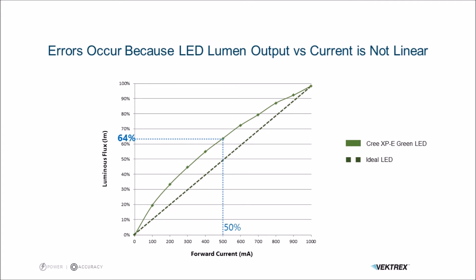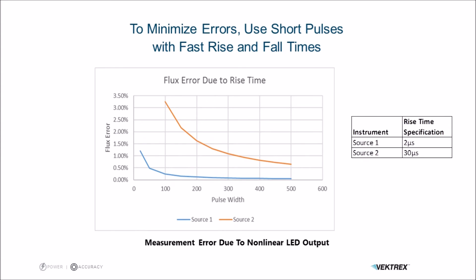If you do the math on the errors, you get some curves like this. Two sources are plotted: one has a 2 microsecond rise time, typical of the SpikeSafe series; another has a 30 microsecond rise and fall, more typical of common source meter instruments. As pulse width gets shorter and shorter, the error due to rise time gets more and more significant. At 100 microseconds, the 30 microsecond rise and fall has over a 3% error — that's pretty significant. The industry recognizes this, and in fact the new TC 263 testing standard specifies that you must use a current source that has a response time of a few microseconds.